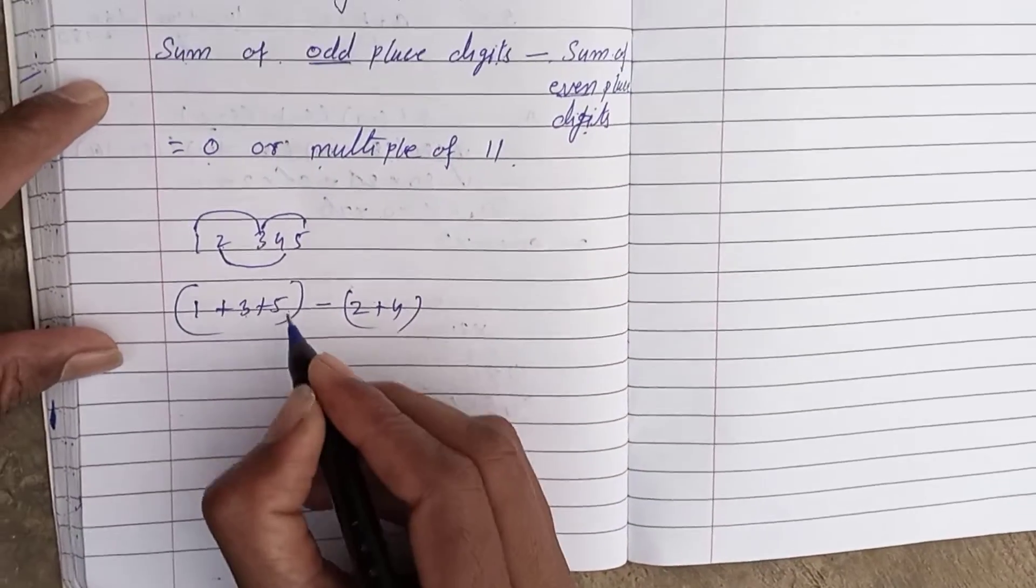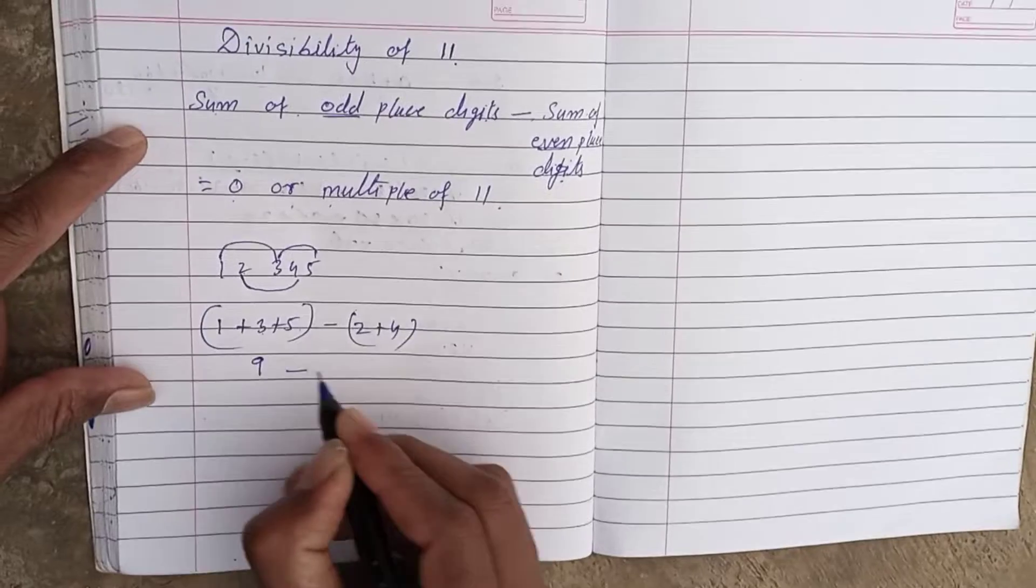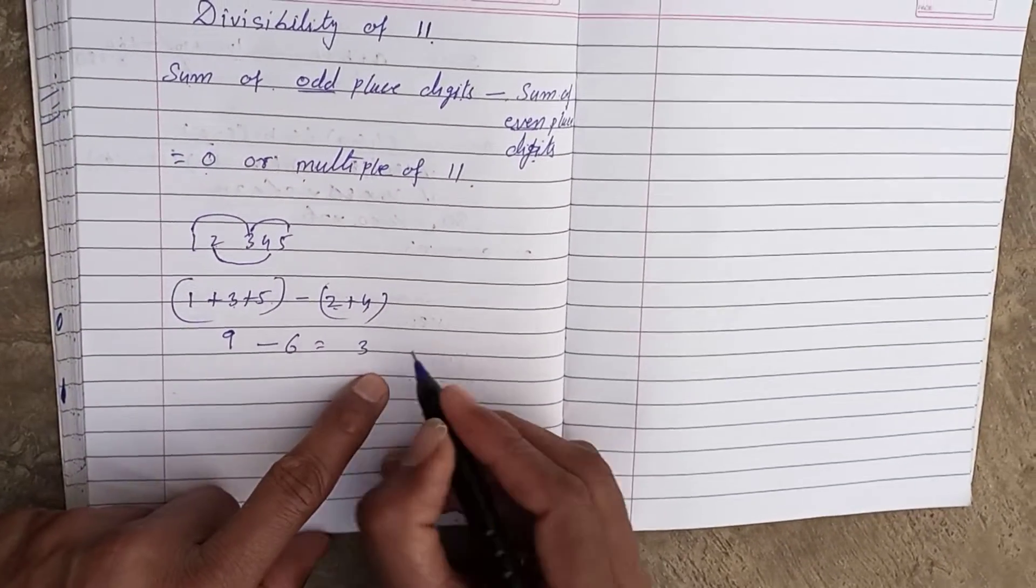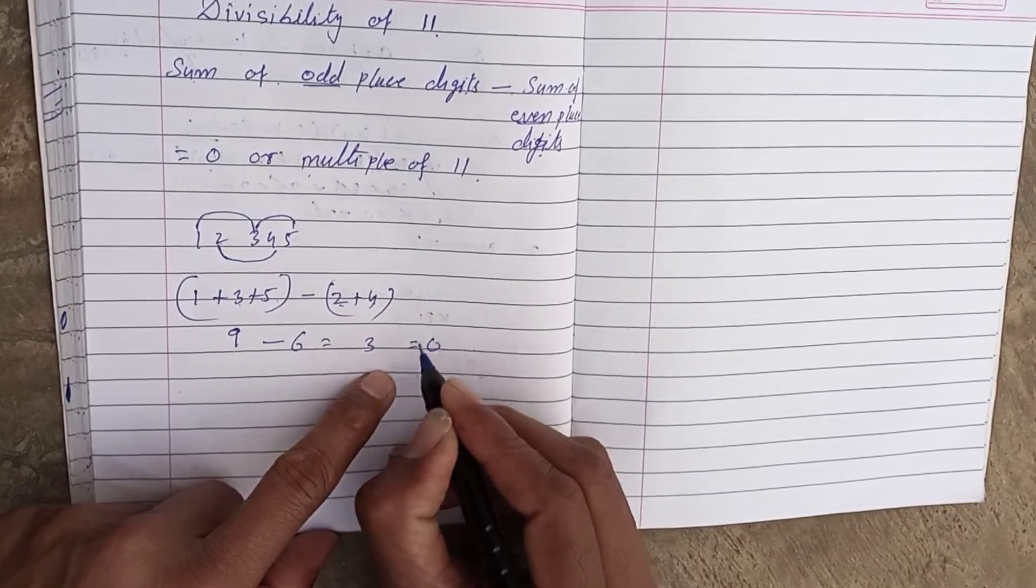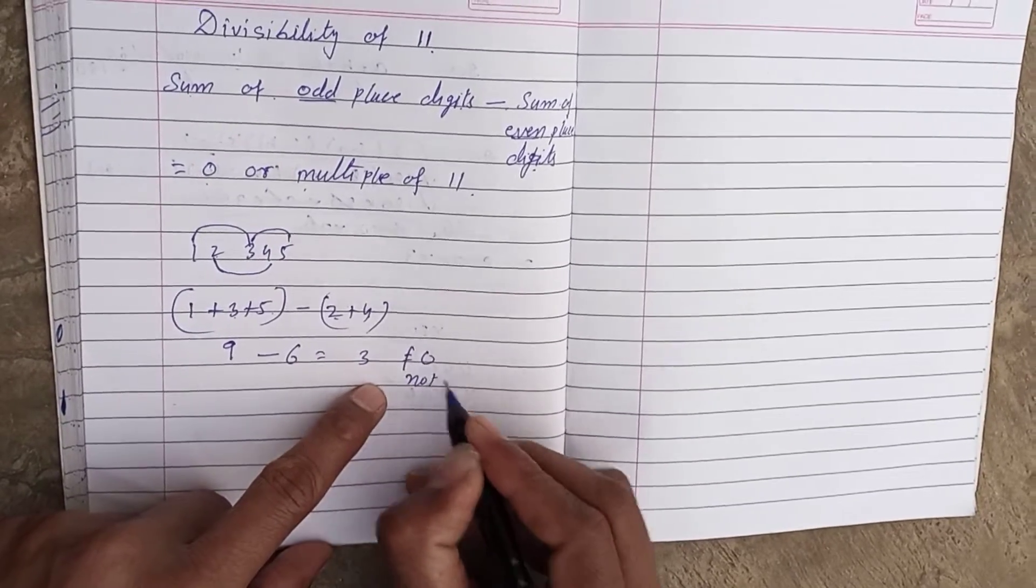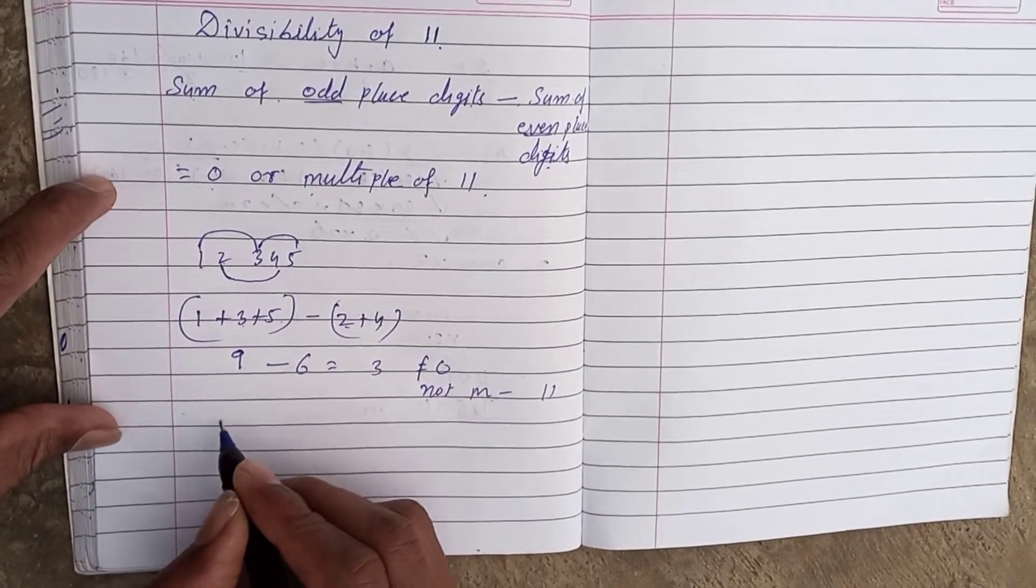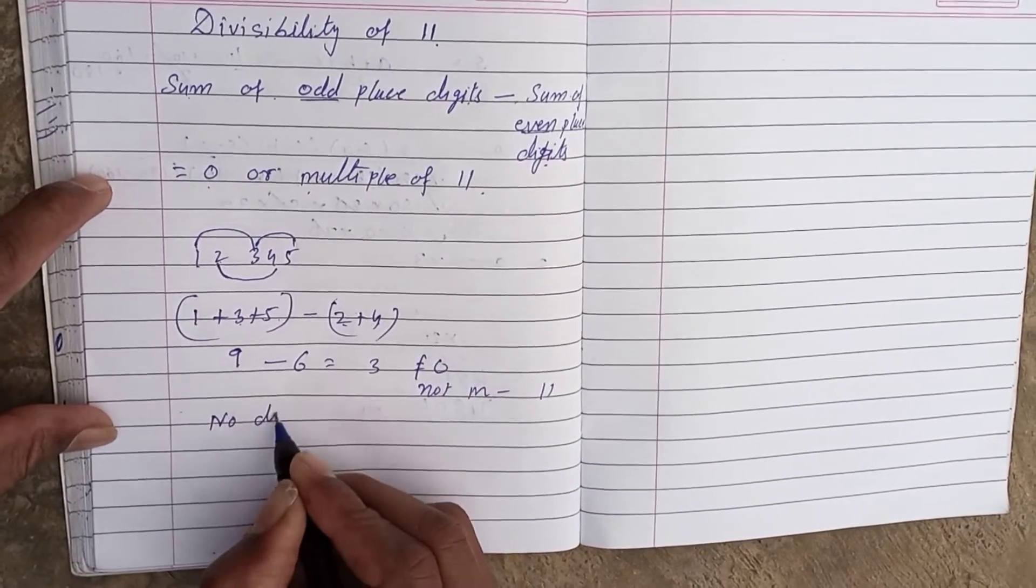1 plus 3 plus 5 equals 9, minus 2 plus 4 equals 6, which equals 3. It is not 0 and not a multiple of 11. So this number is not divisible by 11.